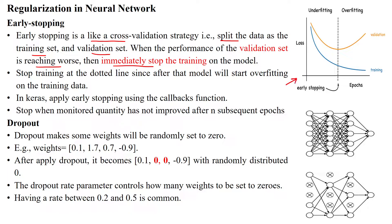For example, take this plot here. The validation dataset loss is starting from here — zero is the lowest loss value and one is the highest. Initially, the validation dataset has approximately 0.9 as the loss value. When you increase the epochs, it reduces step by step, but then after reaching a certain point, it starts increasing again towards the highest value.